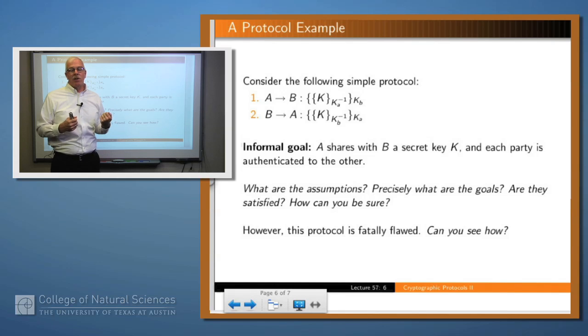Okay, now notice at the end of this step, A knows that it sent the message, but doesn't know that B has received it. And so there's a second step to the protocol in which B extracts K, and it can do that with the appropriate keys, signs the result, and encrypts that result with A's public key, sends the result back.